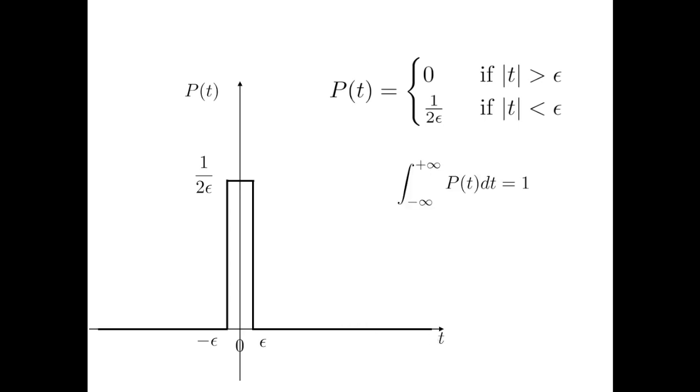One interesting property which is immediate to verify is that the area below this function is just 1, because it's the area of this rectangle, after all. Everywhere else, the function is zero, so if the interval of integration spans from minus infinity to plus infinity, the area is contributed only in this range where the function is non-zero. So, base times height results in 1. The integral between minus infinity to plus infinity is 1.